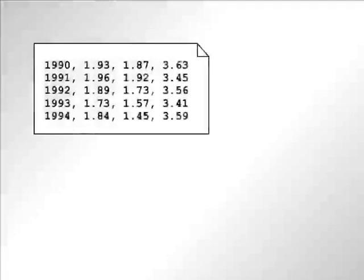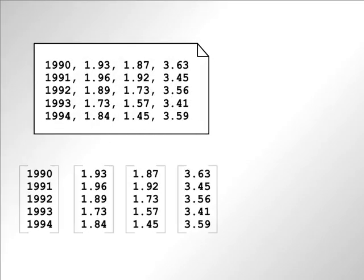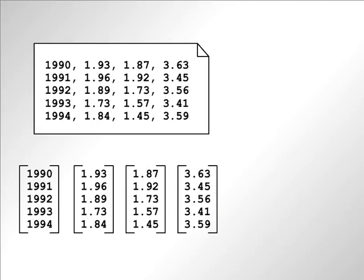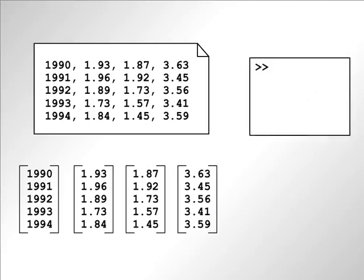Often, if you import data from a spreadsheet or text file, your data will be comprised of column vectors. However, if you create additional vectors using the colon operator, you will find that they are created as row vectors.